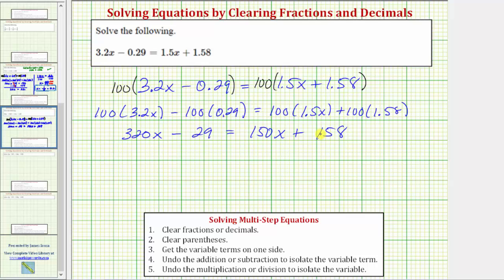Remember, our goal here is to isolate x on one side of the equation, and we cannot do this if we have x terms on both sides. So let's undo or eliminate the 150x on the right side by subtracting 150x on both sides of the equation. Now we simplify both sides.